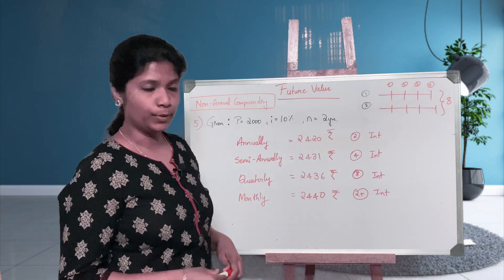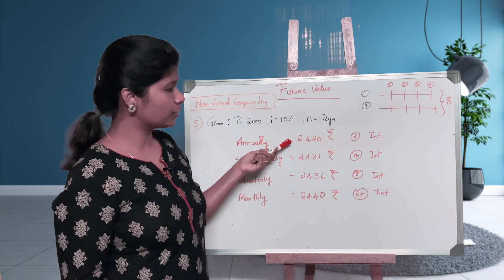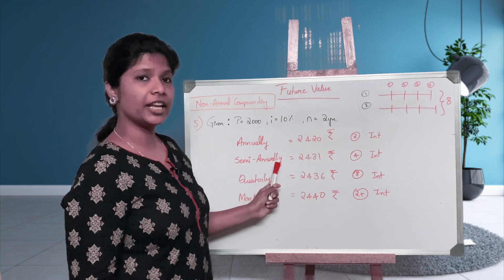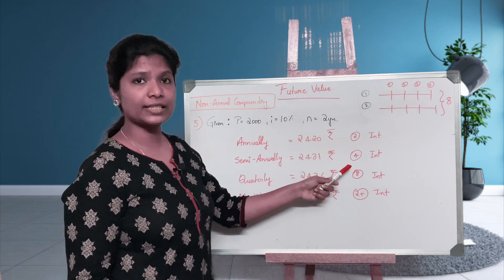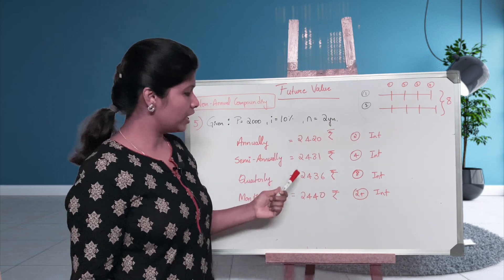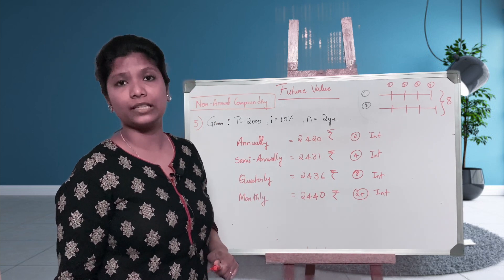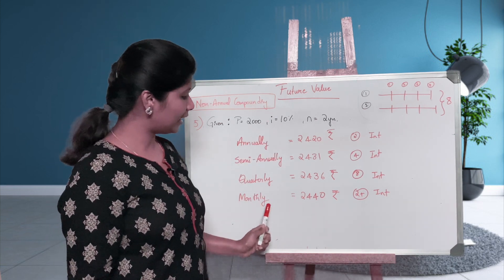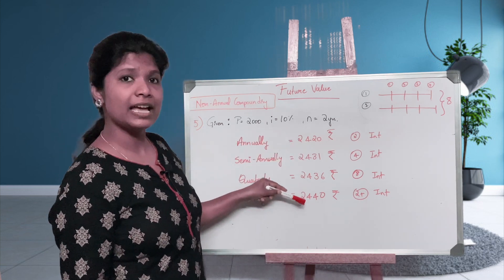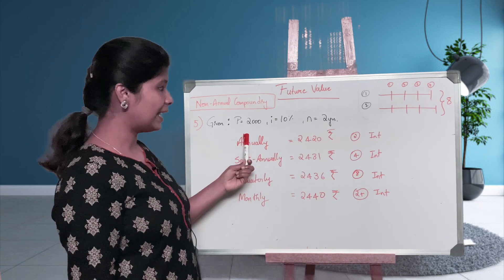Let's look at the conclusion. We calculated on four bases: annually, semi-annually, quarterly, and monthly. Annually — interest paid twice over two years — gives 2,420. Semi-annually — compounded four times — gives 2,431. Quarterly — compounded eight times — gives 2,436. Monthly — compounded 24 times — gives approximately 2,439 to 2,440. You can observe a slight but consistent increase in the total amount as the compounding frequency increases.